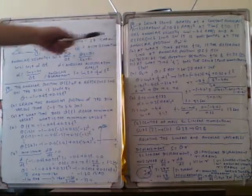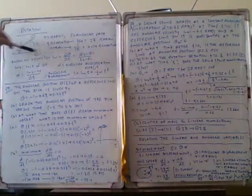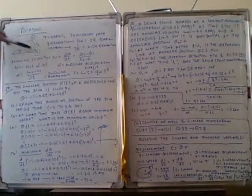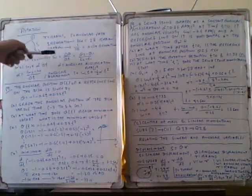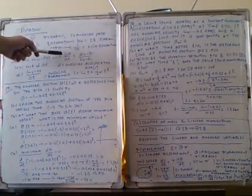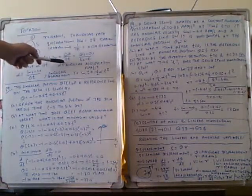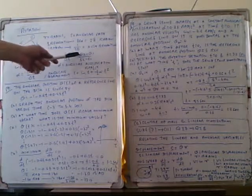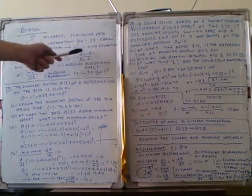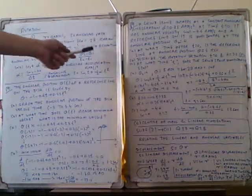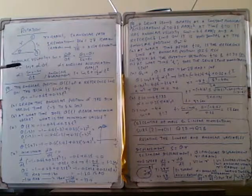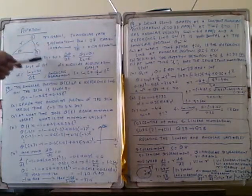The angular velocity can be calculated: angular velocity omega equals delta theta divided by delta t. The initial angle is theta 1 and the final angle is theta 2, so omega equals theta 2 minus theta 1 divided by t2 minus t1.